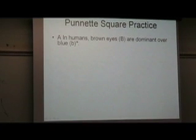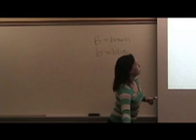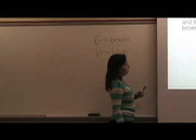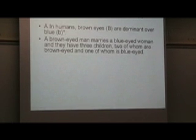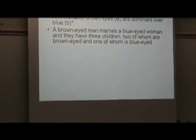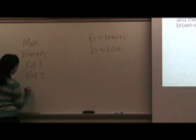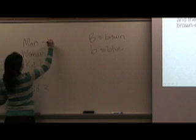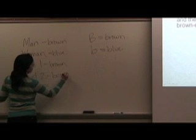In humans, brown eyes are dominant over blue eyes. Let's write down what we know. We're looking at eye color in humans. I know that brown eyes are dominant over blue. Big B gives me brown eyes and little b gives me blue eyes. A brown-eyed man marries a blue-eyed woman and they have three children, two of whom have brown eyes and one who has blue eyes. Let's write all this down on the board. I know I have a man and a woman and I have three kids. The man has brown eyes. The woman has blue eyes. Two of the children have brown eyes and one has blue eyes.